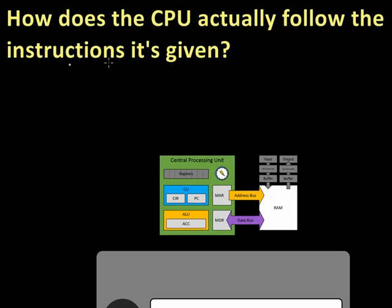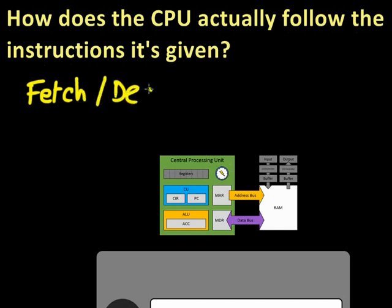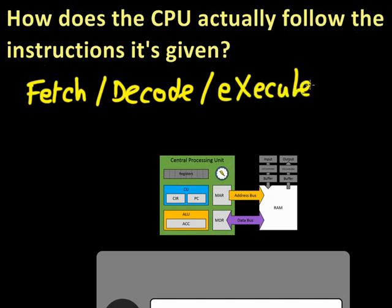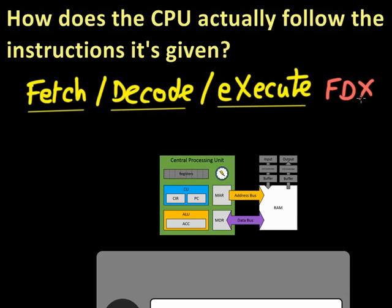How does the CPU actually follow the instructions it's given? It follows a process referred to as the fetch, decode, execute cycle. Let's underline those because they're key. This is referred to as the FDX — which is why the X is in capitals. Sometimes you see it referred to as the FDE cycle as well.